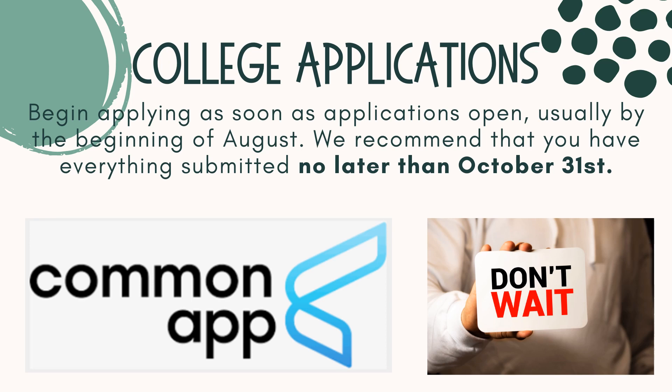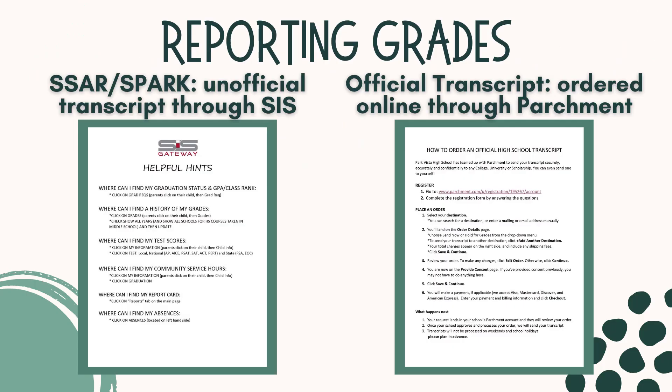If your GPA and test scores are close, you have a chance to be deferred at the college. In your packet, we have given you a couple of resources to help you report your grades. Some colleges will ask you to self-report your grades. Our helpful hints for navigating your SIS portal will help you find your unofficial transcript, so you can look at your history of grades, courses, and test scores. Some colleges, universities, special programs, and scholarships require an official transcript. To order your official transcript, you will need to go to Parchment.com. Once you set up an account, you will be able to see an updated transcript and send official copies. The detailed directions can be found in your packet and on our website.